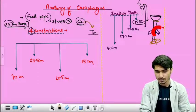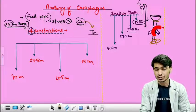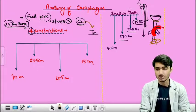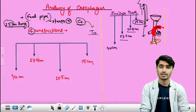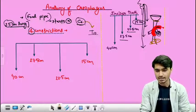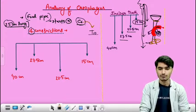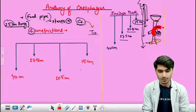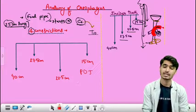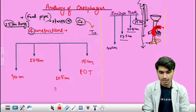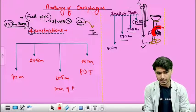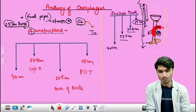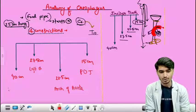The second constriction is at 22.5 centimeters, due to the arch of the aorta. The third constriction is at 27.5 centimeters, due to the left bronchus. The fourth and last constriction is at 40 centimeters, due to the diaphragm. So we have four constrictions: at 15 cm (pharyngoesophageal junction), 22.5 cm (arch of aorta), 27.5 cm (left bronchus), and 40 cm (diaphragm).